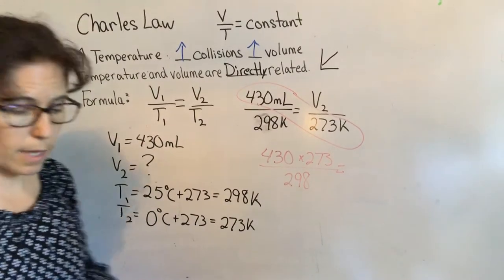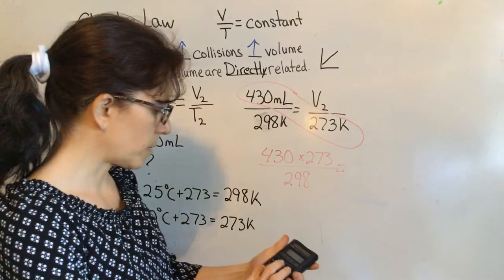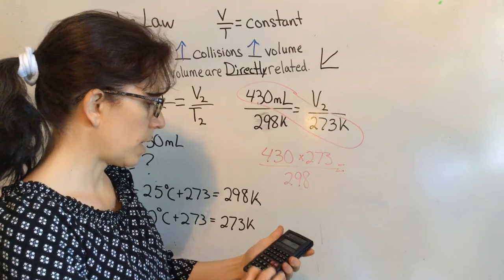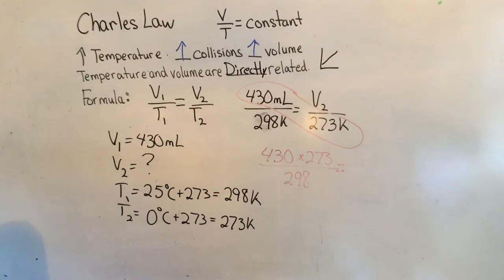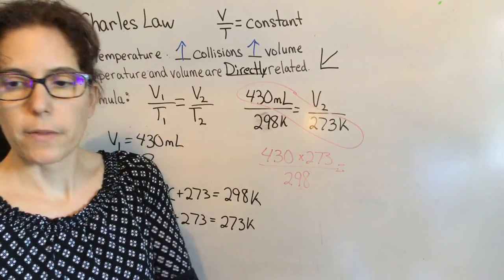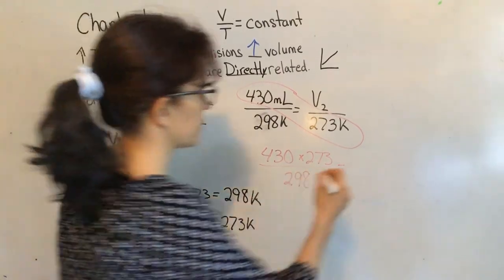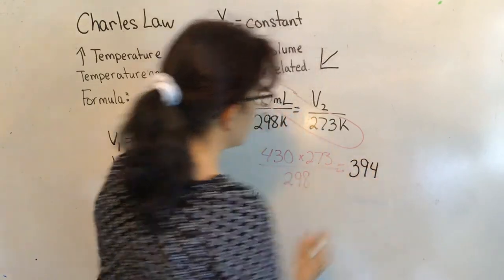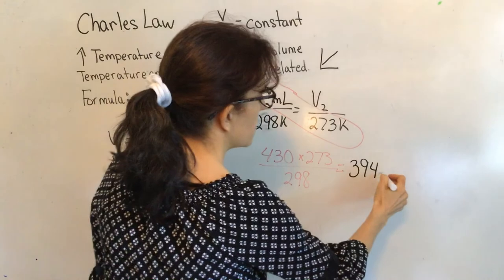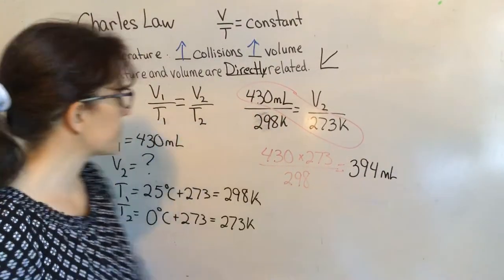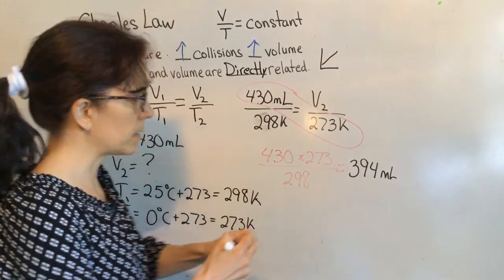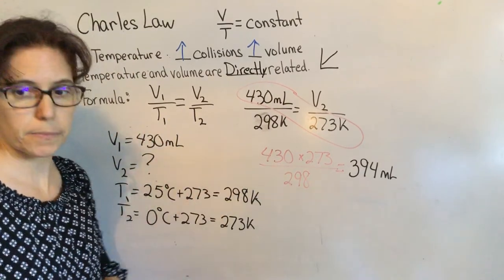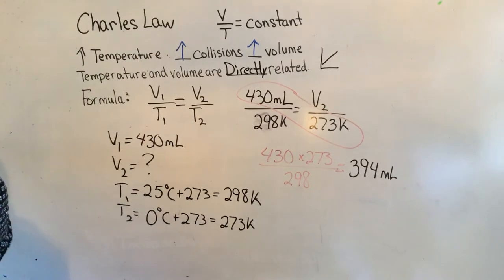Multiply 430 times 273, then divide by 298, and you get 393.9 — rounded up to 394. Don't forget your units: since V1 was in milliliters, V2 must also be in milliliters. You cannot change the units of volume. So the answer is 394 milliliters.